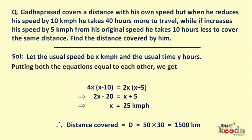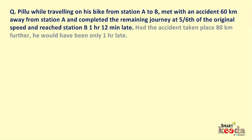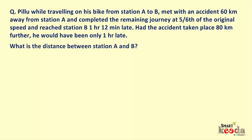Moving forward, let's now take the next question: Pillu, while travelling on his bike from station A to B, met with an accident 60 km away from station A and completed the remaining journey at 5/6 of the original speed, reaching station B 1 hour 12 minutes late. Now had the accident taken place 80 km further, he would have been only 1 hour late. What is the distance between station A and B? Before we try solving this, let's draw a rough diagram to better understand the question.